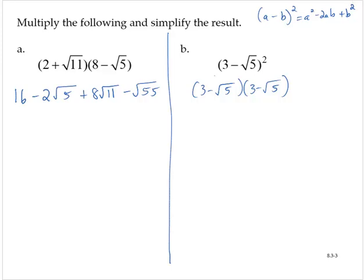Either way, we now have 3 times 3 is 9, 3 times negative square root of 5 minus 3 square root of 5. Then minus square root of 5 times 3, again that's minus 3 square root of 5, and then we have a negative times a negative, so plus the square root of 5 squared or the square root of 25.